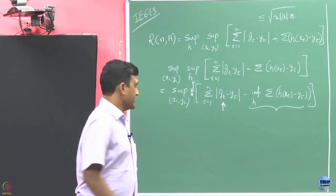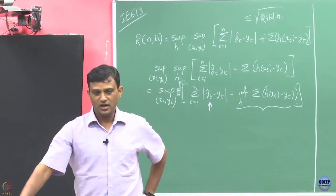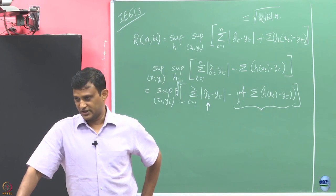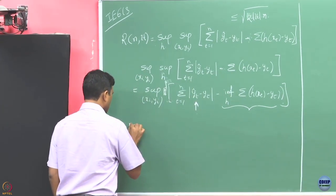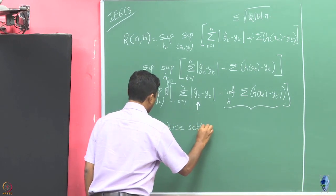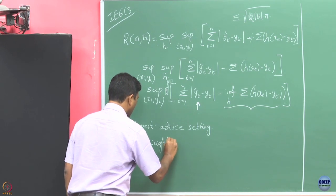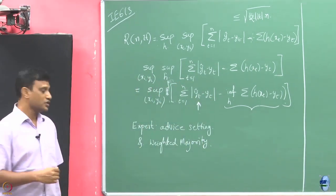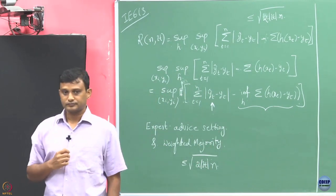In the full information setup, we obtained bounds using the weighted majority algorithm. In the weighted majority algorithm, we get to see the predictions made by all hypotheses in every round. Using the expert advice setting with weighted majority, one can achieve a regret bound of 2 times the square root of cardinality of H times n for this setup.